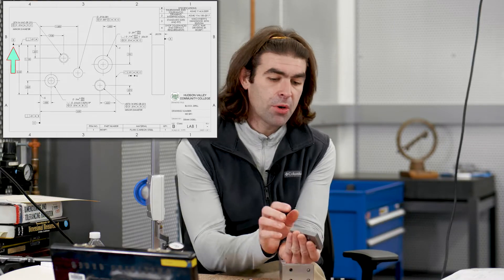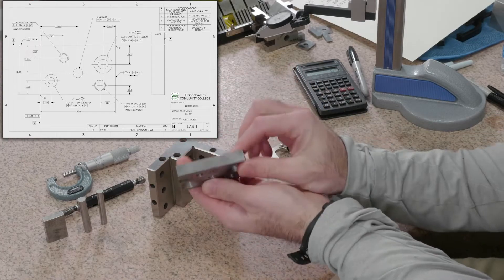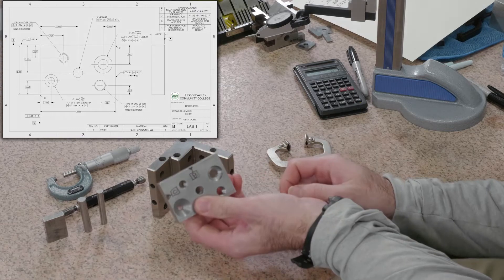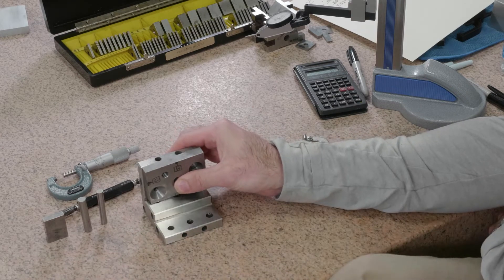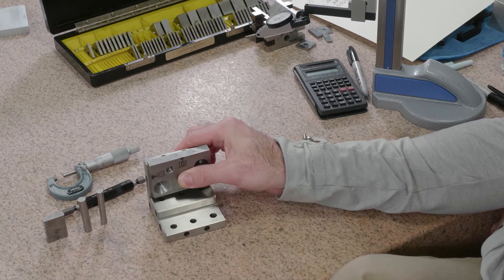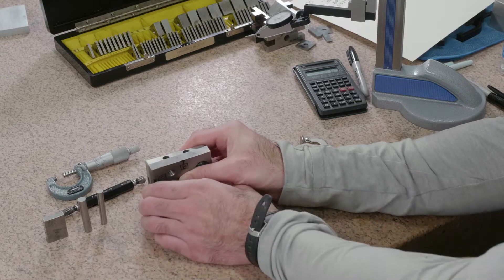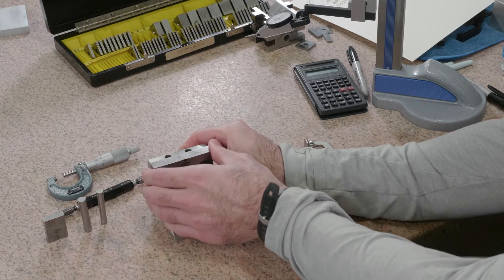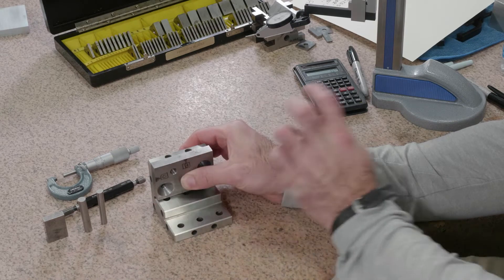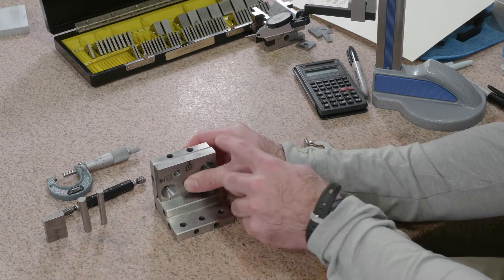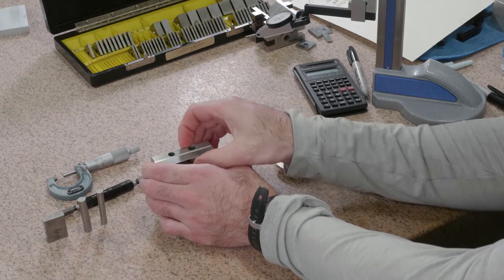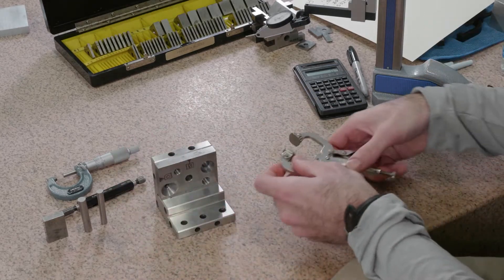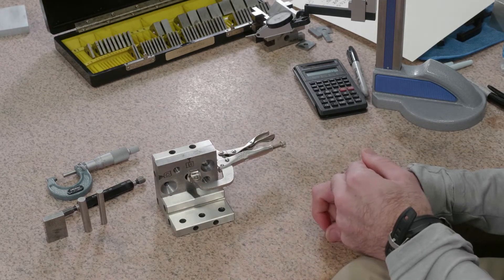Next up is datum B. This is a perpendicularity to datum A. So essentially, I've marked it on our part down here, this is datum B. We want to make sure it's perpendicular to datum A. The way we're going to do that, we'll use a precision angle block. I'm going to set datum A against the angle block. Now there's two ways to do it: we can either clamp it to here and then indicate the surface in, or we can take a chance that these two surfaces are parallel and just drop it onto here, as long as we've got three points of contact from datum A to this surface. So I'm going to go ahead and do that. I'll clamp the part so I don't have to hold it.